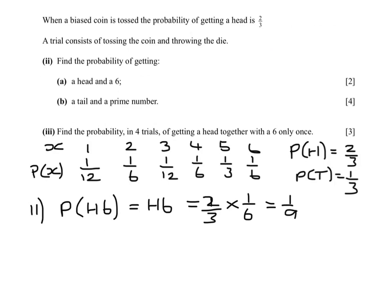A tail and a prime number would have been a tail and 2, a tail and 3, a tail and 5. So 1 third times 1 sixth plus 1 third times 1 twelfth plus 1 third times 1 third, which is 7 over 36.